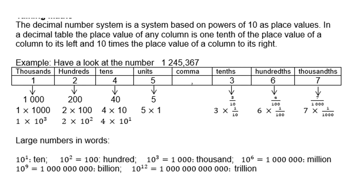Now, large numbers in words: 10 to the power 1 is just 10; 10 to the power 2 is a hundred; 10 to the power 3 is a thousand; 10 to the power 6 is a million; 10 to the power 9 is known as a billion; and 10 to the power 12 is known as a trillion.